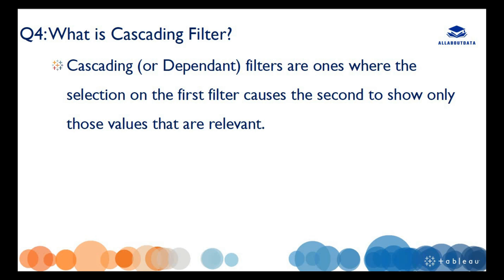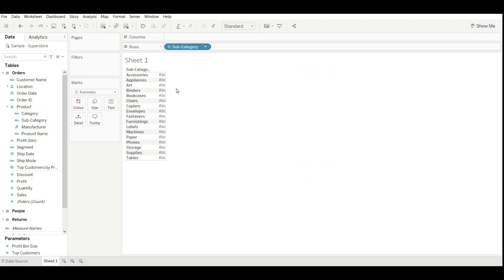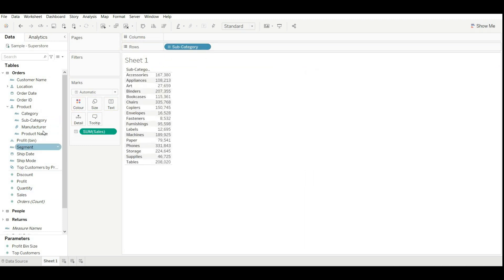The next question is: what is a cascading filter? A cascading filter is also called a dependent filter. Cascading filters are ones where the selection of one filter causes the second filter to show only those values that are relevant.